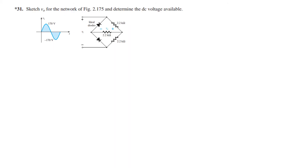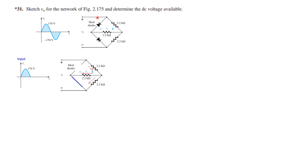Now for question number 31 — a similar question to find the output voltage and equivalent DC. For the positive half cycle, one diode is reverse biased shown as an open circuit, and the other is forward biased shown as a short circuit. Tracing the current, it will have two paths, so again we draw the equivalent circuit.